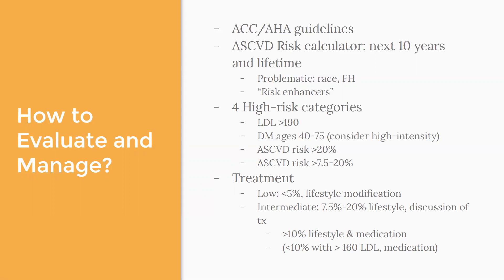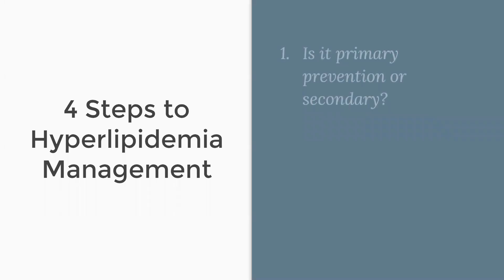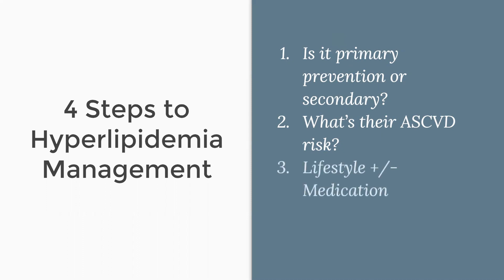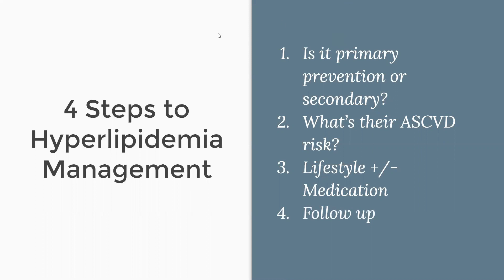So that's a lot of information, but in practice you pull up the risk calculator, plug it in, and if it recommends a statin, great. If not, think about whether they're greater than 5% or greater than 7.5%, and then consider what risk factors could push them into the statin category. To recap — four steps: number one, confirm this is primary versus secondary prevention. Number two, assess their ASCVD risk using the calculator. Number three, decide on lifestyle plus or minus medications based on their score. Number four, plan the follow-up.